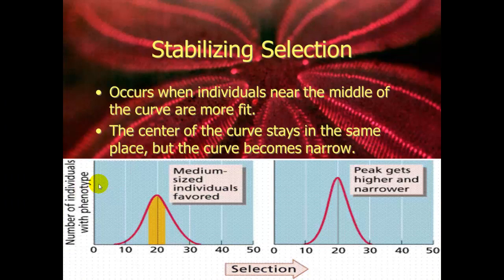Stabilizing selection happens when individuals near the middle are more fit. Basically what this does is causes the population to stabilize in the middle, allowing a higher peak to form. The favored area is at 20, that population has grown, and the others have slimmed out, because the area around 20 has been thriving.